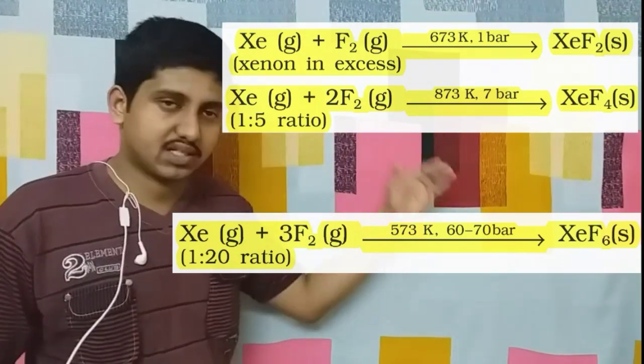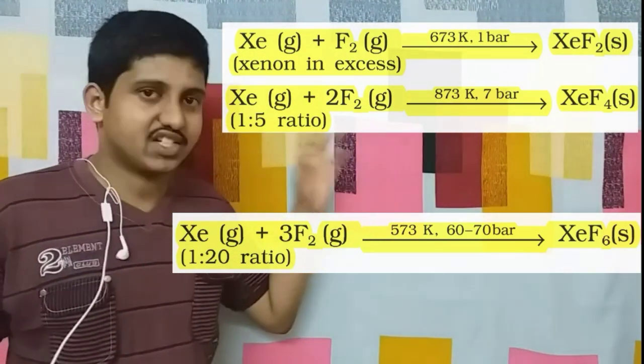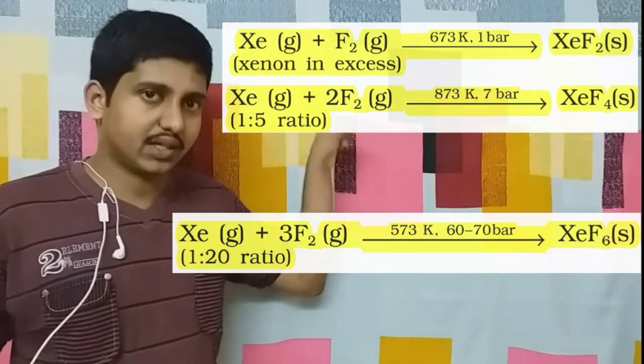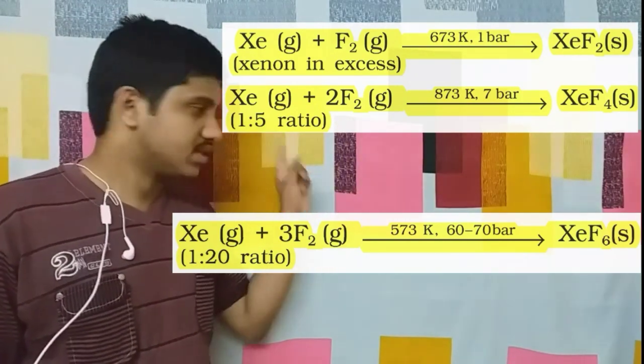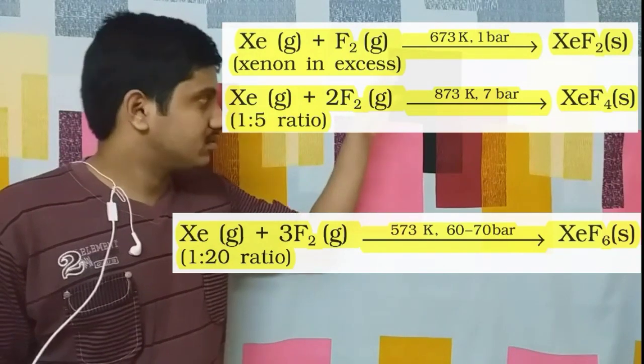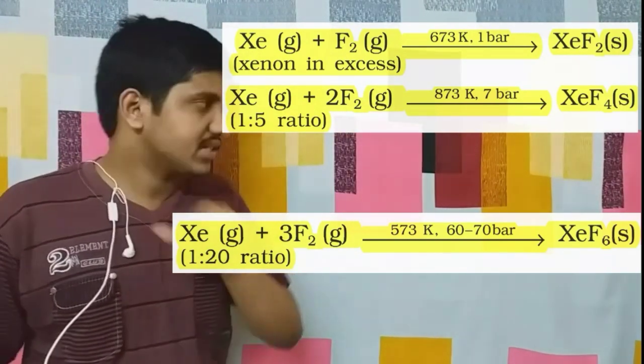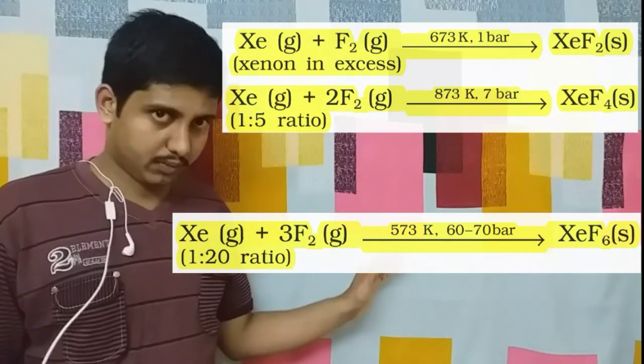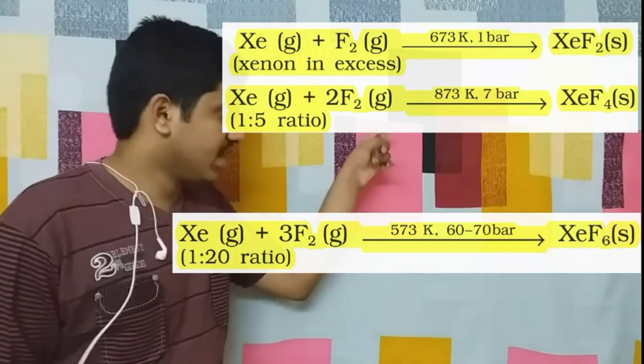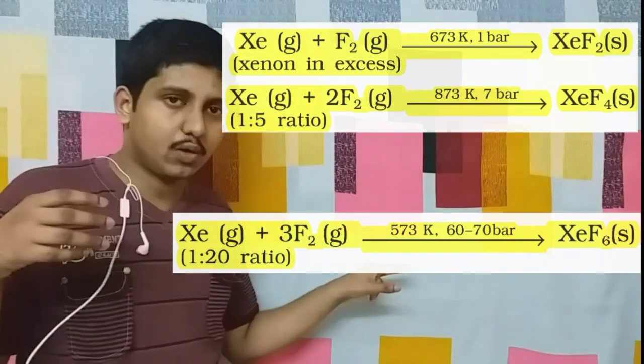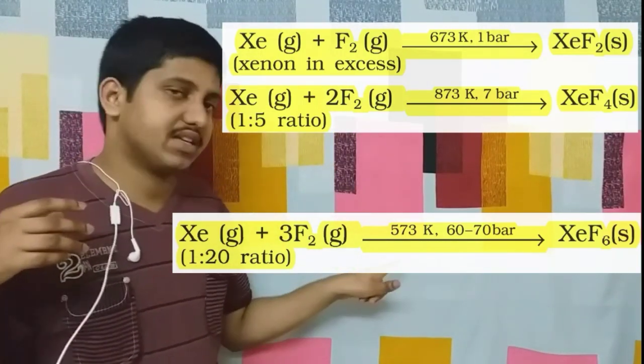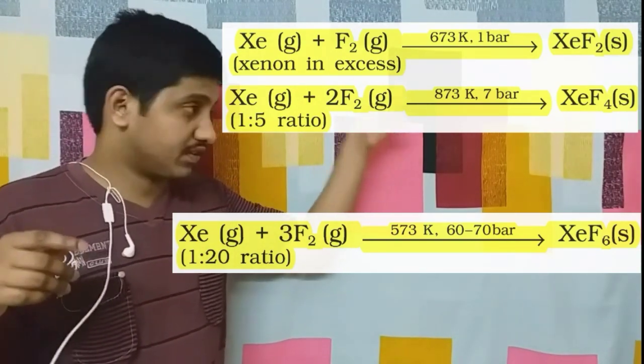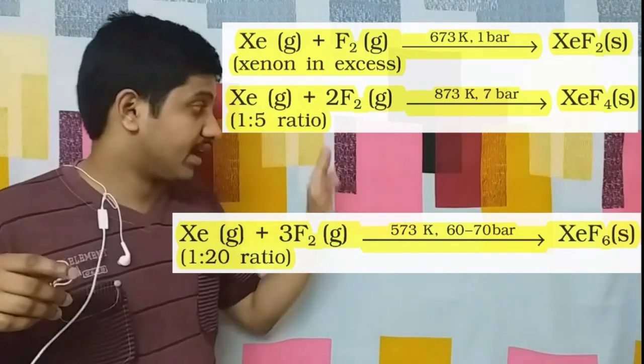The other thing is regarding the preparation of various xenon fluorides: XeF2, XeF4, and XeF6, which is very important. Please note the reaction conditions. As the fluorine atoms are increasing in the product, the concentration of fluorine is also increasing on the reaction side. First case, we have 1:1 ratio; second, 1:5; third, 1:20 ratio. In the reaction conditions, you can see temperature is increasing: 673 K, 873 K, then 573 K, but pressure has tremendously increased: 1 bar for XeF2, 7 bar for XeF4, and 60 to 70 bar for XeF6.